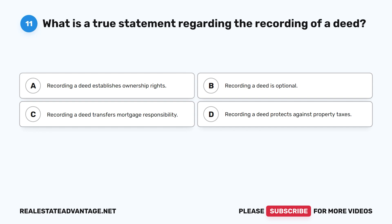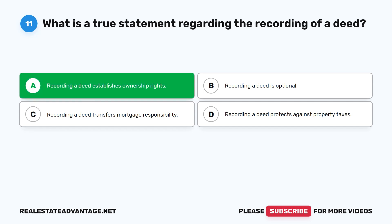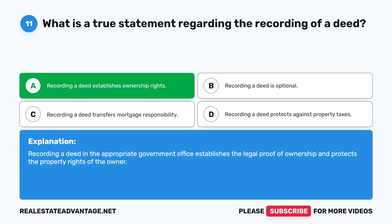Question 11: What is a true statement regarding the recording of a deed? A. Recording a deed establishes ownership rights. B. Recording a deed is optional. C. Recording a deed transfers mortgage responsibility. D. Recording a deed protects against property taxes. The correct answer is A: Recording a deed establishes ownership rights. Recording a deed in the appropriate government office establishes the legal proof of ownership and protects the property rights of the owner.